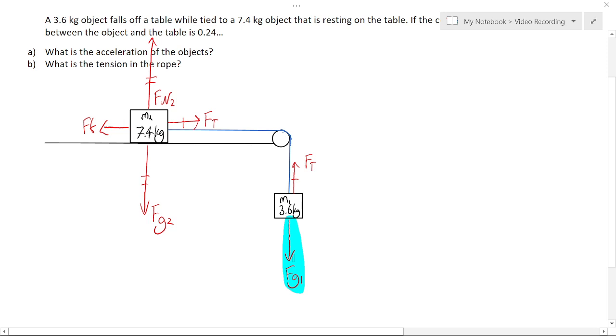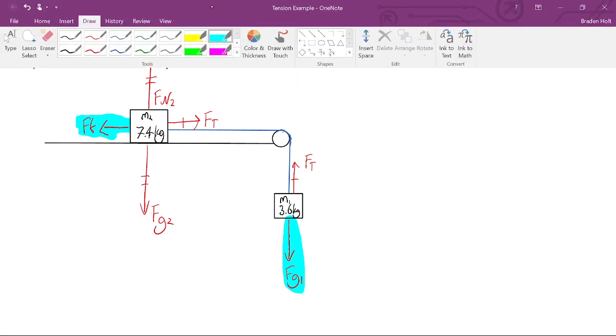And secondly, we think what forces are opposing Fg1? Well, only friction is opposing Fg1. It's the only force pulling against the winning force. So that's our losing force.